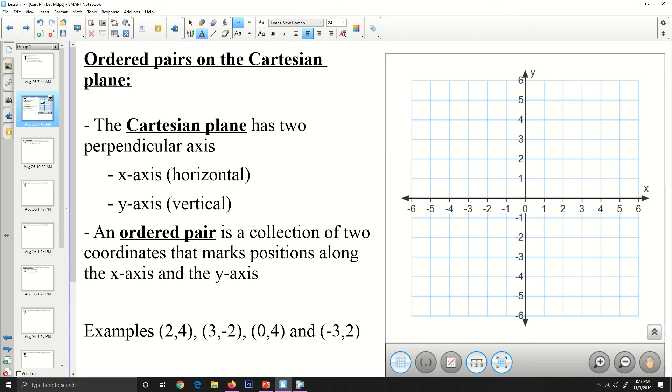First, here is the Cartesian Plane. It has two perpendicular axes. We usually call the horizontal axis the x-axis, and the vertical axis the y-axis. An ordered pair is a collection of two coordinates that marks positions along both the x- and y-axis.